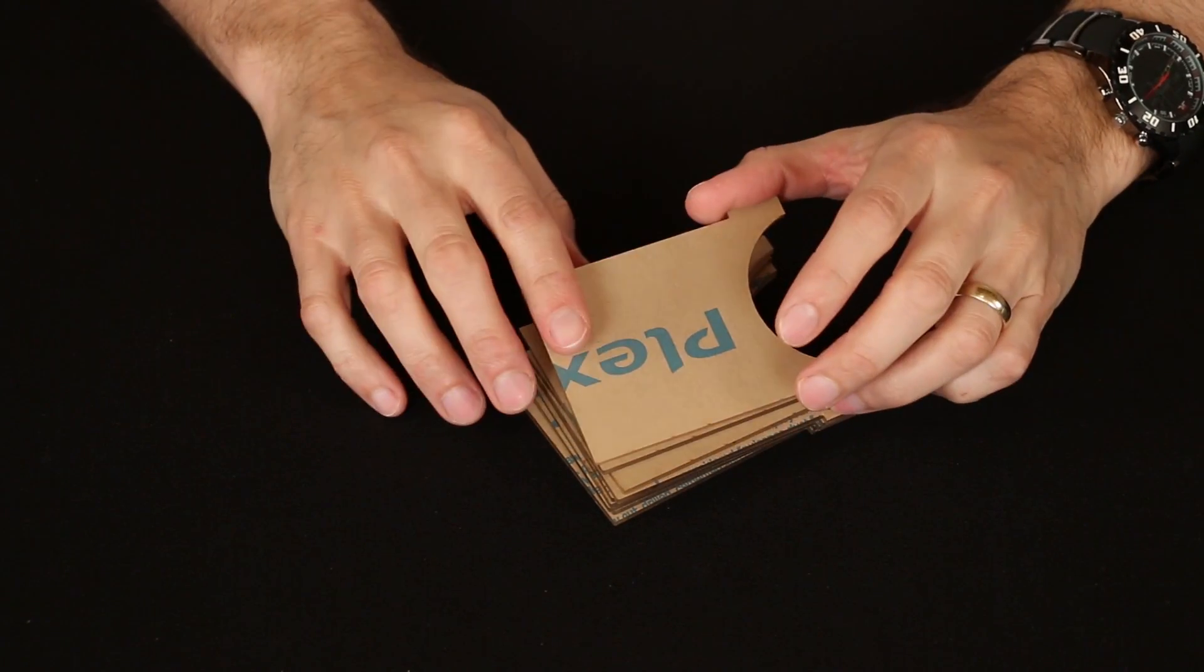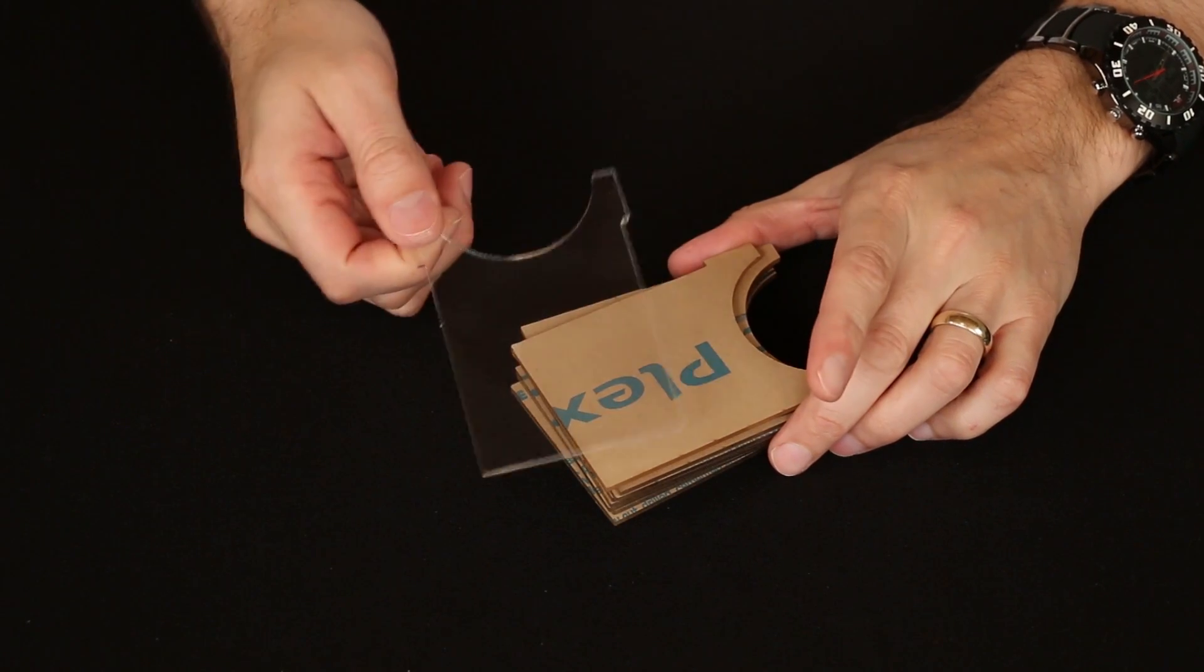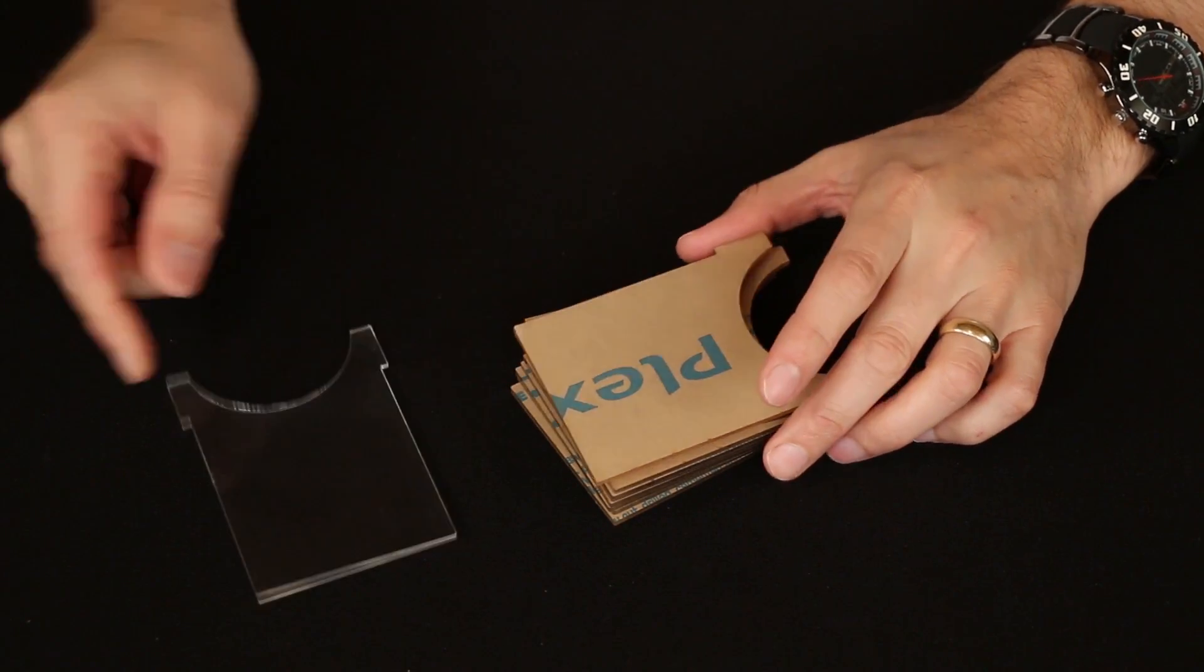We have our dividers and they're covered in this protective film, which you're going to want to take off so that then your dividers look like this. It's pretty simple.